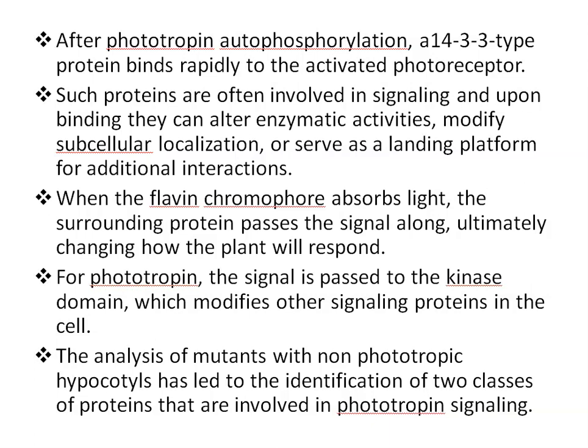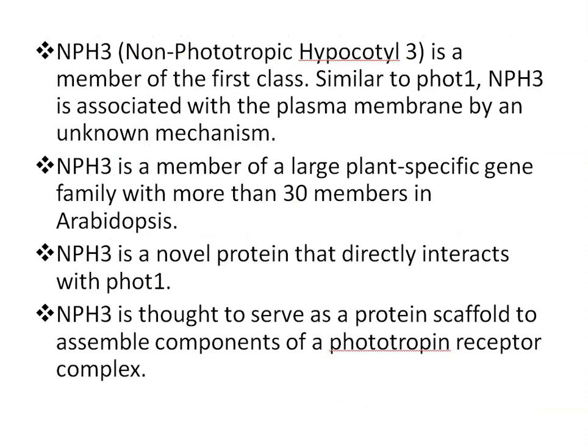When flavin FMN chromophore absorbs light, the surrounding protein passes the signal along, ultimately changing how the plant will respond — to receive light or to avoid light. For phototropins, the signal is passed to the kinase domain, which modifies other signaling proteins in the cell. Analysis of mutants with non-phototropic hypocotyls has led to the identification of two classes of protein involved in phototropin signaling. NPH3, non-phototropic hypocotyl-3, is a member of the first class. Similar to phototropin, NPH3 is associated with the plasma membrane by an unknown mechanism.